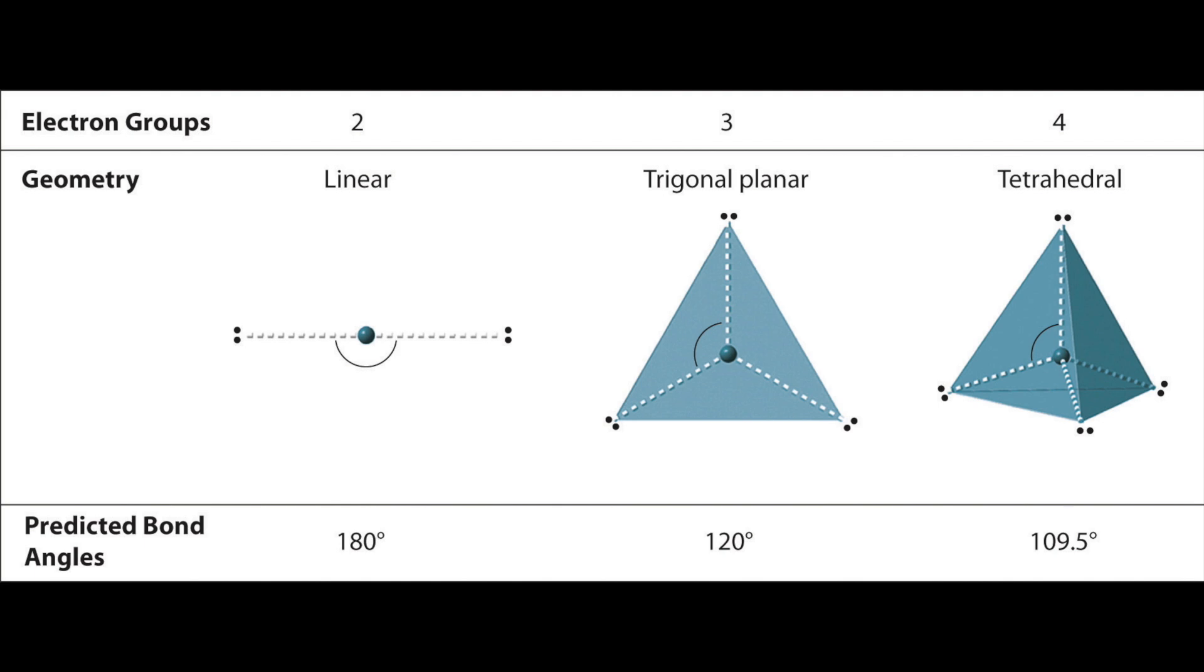When we have three electron groups, the farthest the electrons can be apart is 120 degrees, and we call this trigonal planar because it forms a triangle. With four electron groups, the farthest the orbitals can be apart is 109.5 degrees, and this forms a tetrahedral electron geometry.